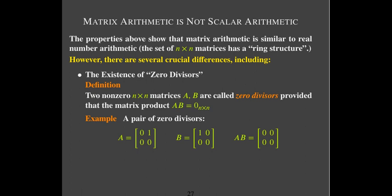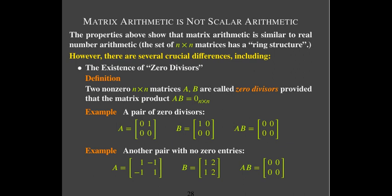For instance, if I have something like A(B − C) = 0, that does not mean A equals zero or B minus C has to equal zero. And it's easy to find examples where neither A nor B have any zero entries at all, yet their product is the zero matrix.